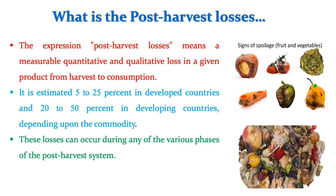Andhra Pradesh, Maharashtra, Uttar Pradesh, Gujarat, and Karnataka are the leading states of food production, which have a combined share of 51% of total production. West Bengal, UP, MP, Bihar, and Gujarat together account for 55% of the national vegetable production.